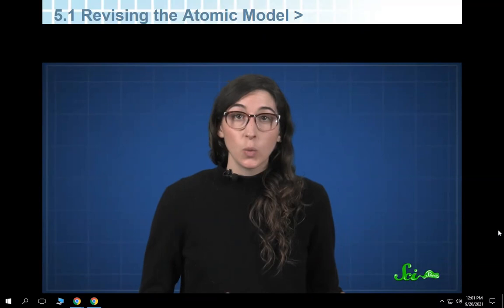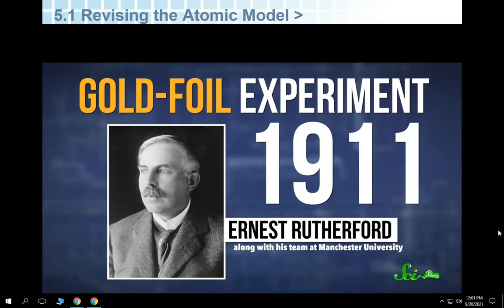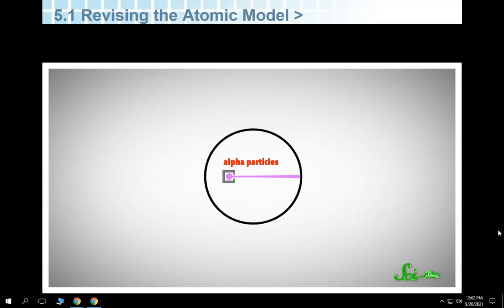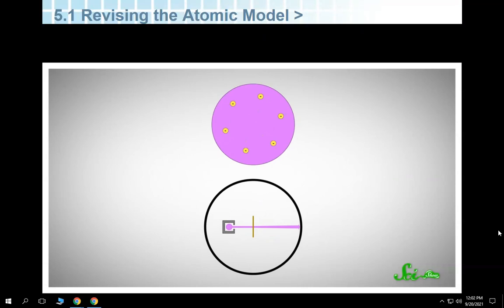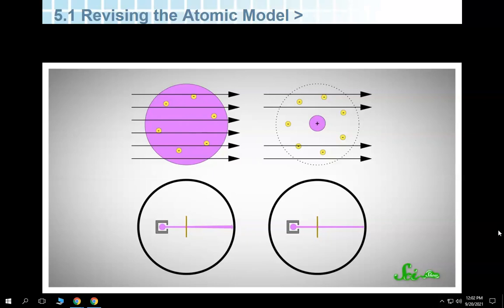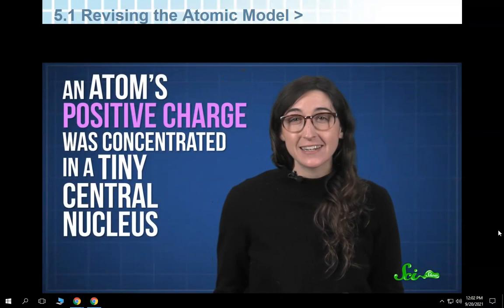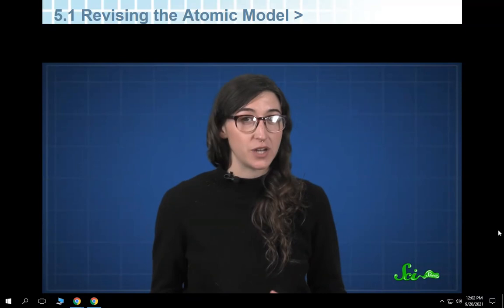But that all changed around 1911, when a scientist named Ernest Rutherford, along with his team at Manchester University, published the results of the famous gold foil experiment. Rutherford and his colleagues fired alpha particles, which are positively charged, at thin gold foil. According to the plum pudding model, the alpha particles should have just passed straight through the foil, because atoms would be mostly empty space, with some charges scattered around. And atoms are mostly empty space, so most of the alpha particles did pass straight through the foil. But, to Rutherford's surprise, some alpha particles were deflected, by a lot.